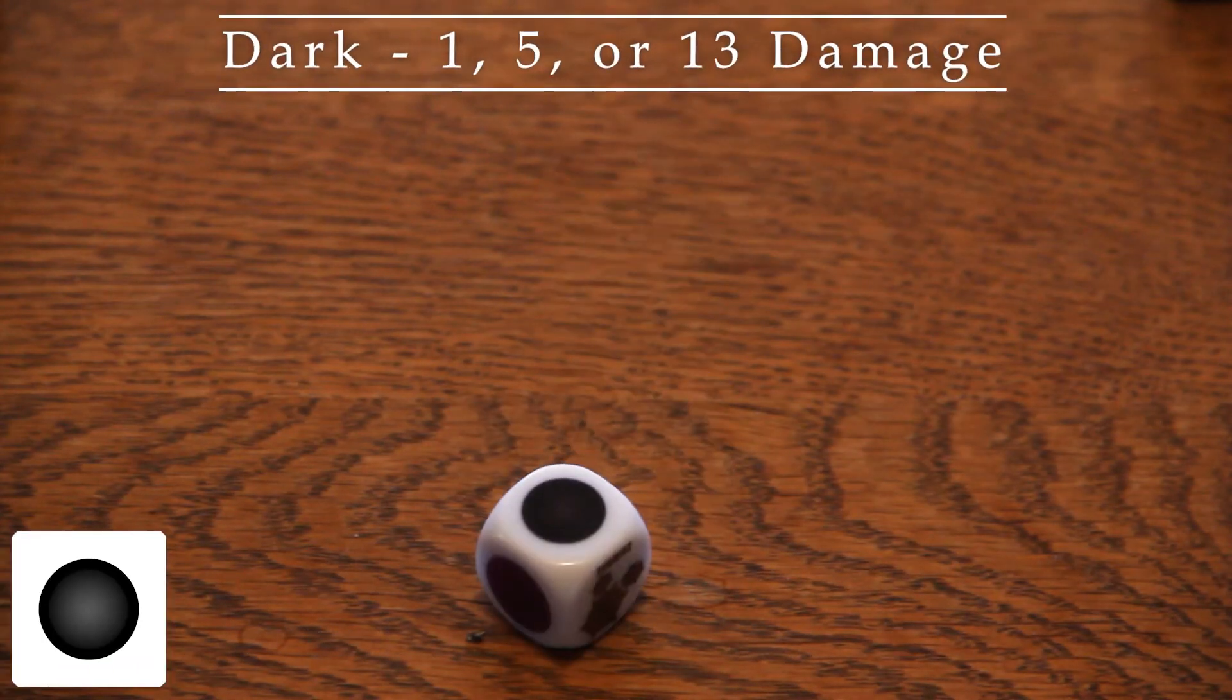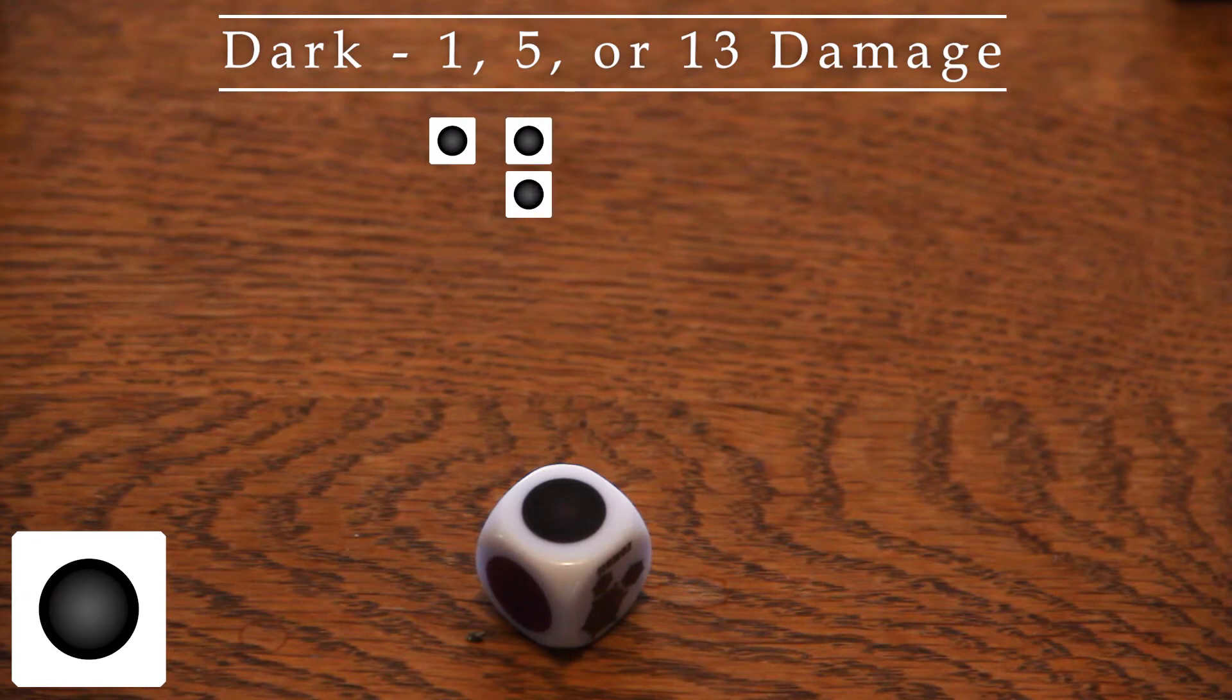Dark. Rolling 1 dark deals 1 damage, rolling 2 at the same time deals a total of 5 damage, and rolling 3 dark at the same time deals 13 damage total.